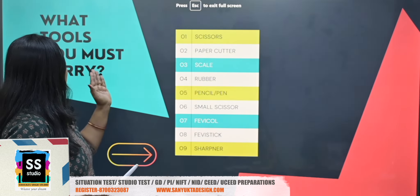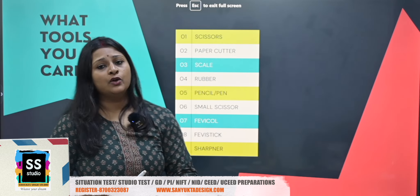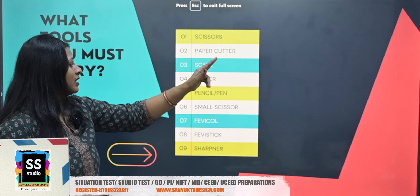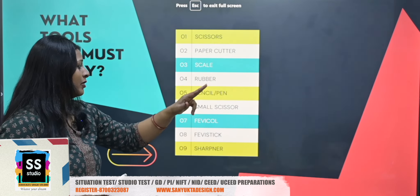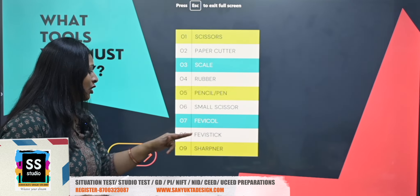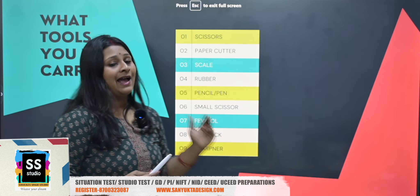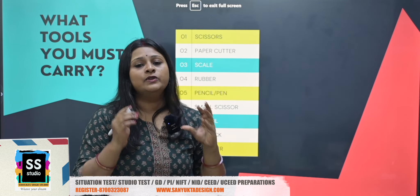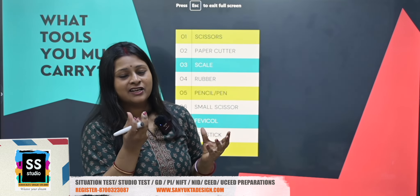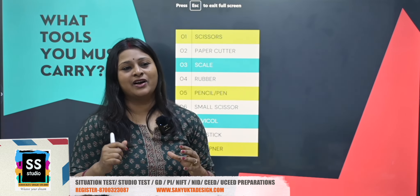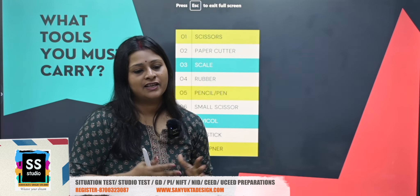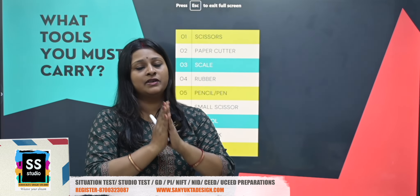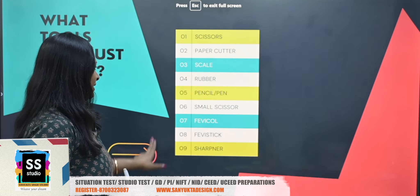These are the tools which you are going to carry for your situation test: scissors, paper cutter, scale, rubber, pencil, pen, small scissor, fevicol, fevy stick, and sharpener. No other tools are allowed. If you want to carry shape cutters or glue guns, please do not carry them because they are strictly prohibited there.